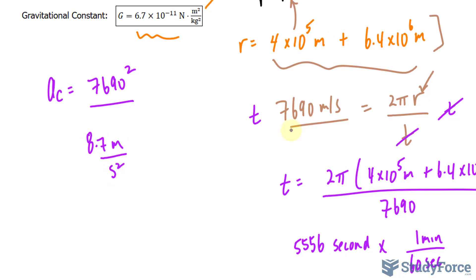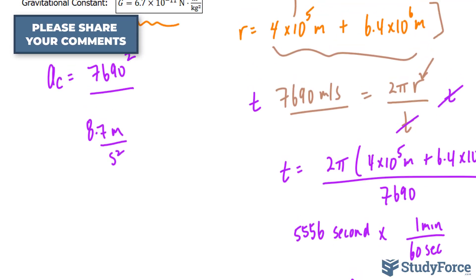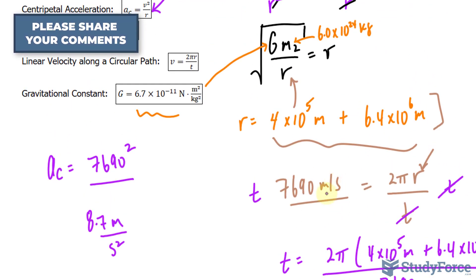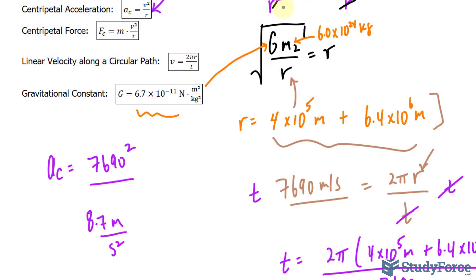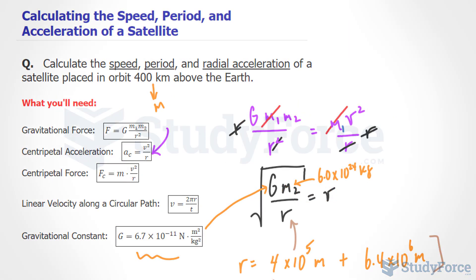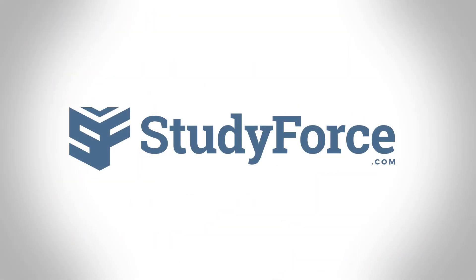When you do these problems, you want to include the units along the way. The reason I excluded them throughout the calculations is because I knew what the outcome was going to be. I didn't want to run through all the units and make a mess. But you get the idea. That is how to calculate the speed, period, and acceleration of a satellite.